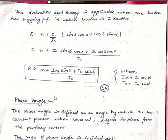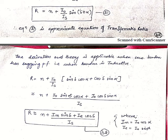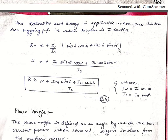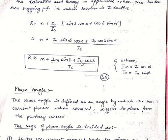This derivation and theory is applicable when the secondary burden has a lagging power factor, that is when the burden is inductive. If we take our transformation ratio further and expand sin(delta + alpha), we get sin(delta)*cos(alpha) plus cos(delta)*sin(alpha).